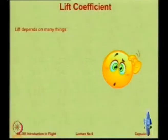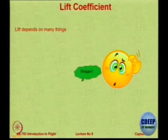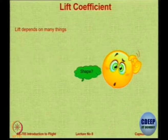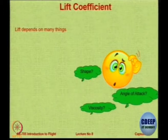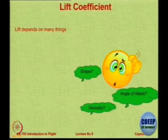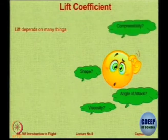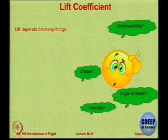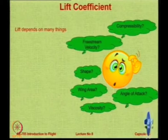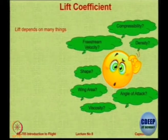There are some coefficients. The lift that you generate on a body is not just a function of velocity and curvature — there are many more things. For example, it depends upon the shape, because different shapes create different streamline curvature. It depends upon angle of attack, because that also creates a difference in curvature. It depends upon viscosity, which affects the friction acting on the body, compressibility, which affects the transfer of momentum between the fluid, then area, free stream velocity, and density. All these things and more will affect the amount of lift generated.